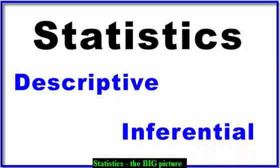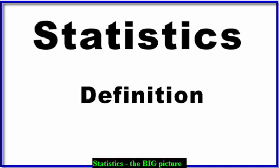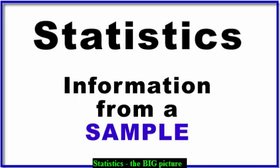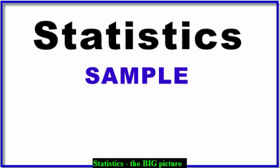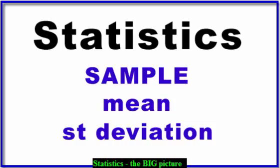Let's start with the definition of statistics. Statistics is information that has been gathered from a sample — that's all that means. A statistic is a piece of information from a sample. Some examples of statistics are sample mean, sample standard deviation, range, sample size, and so on. Any piece of data gathered from a sample, not a population, is called a statistic.